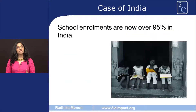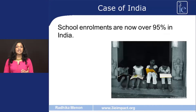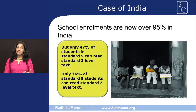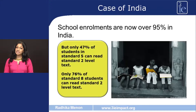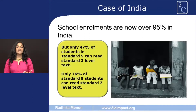Let's move to the specific case of India. School enrolments here are over 95 percent but learning continues to remain shallow. Only 47 percent of students in standard 5 can read standard 2 level text, and only 76 percent of standard 8 students can read standard 2 level text. So clearly learning doesn't improve as grades progress.